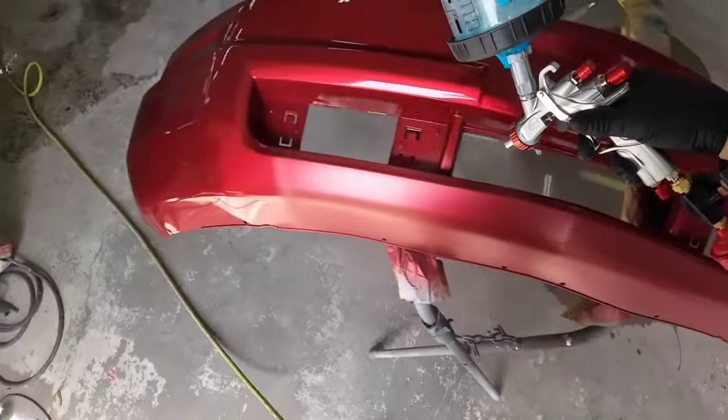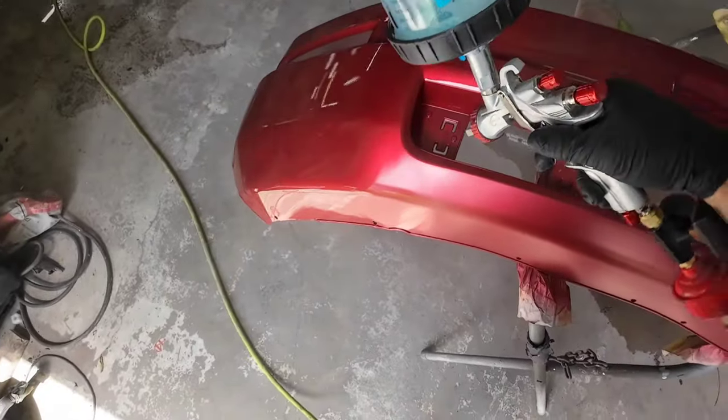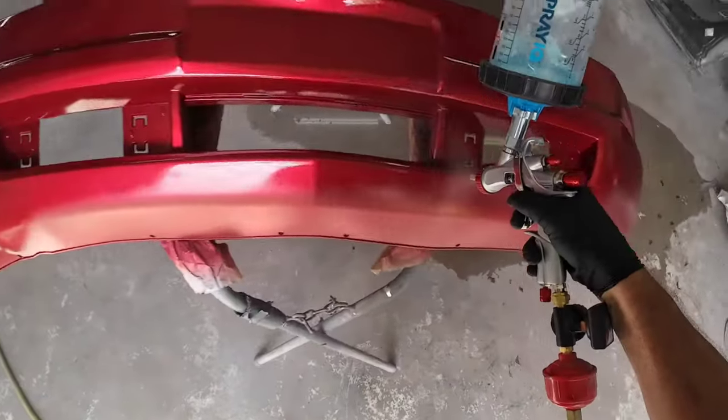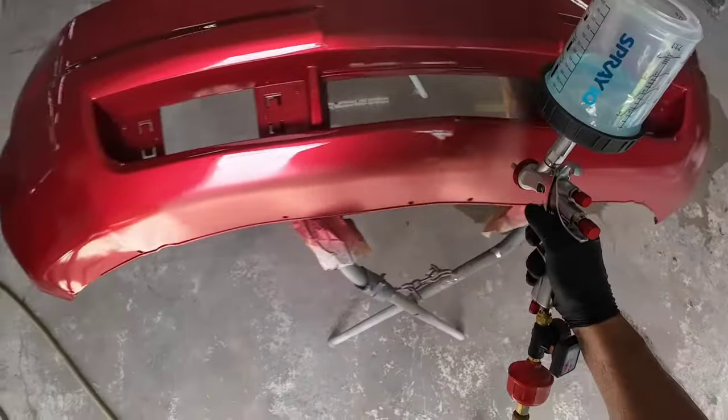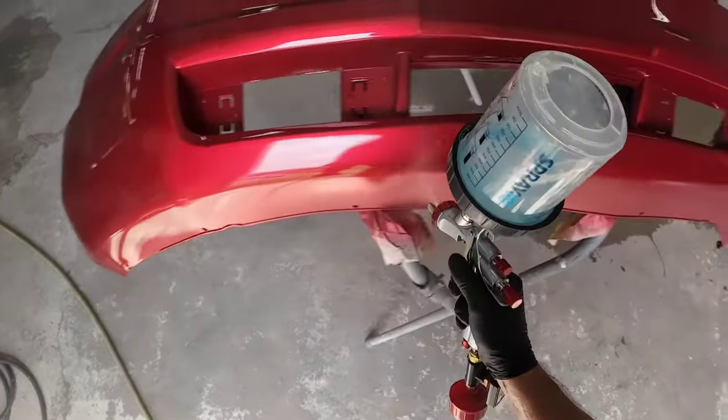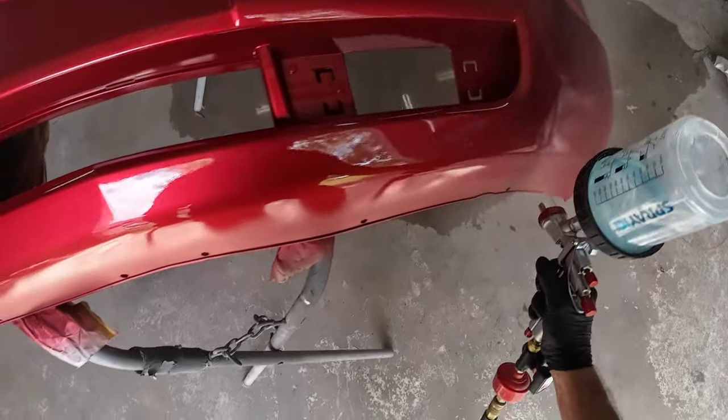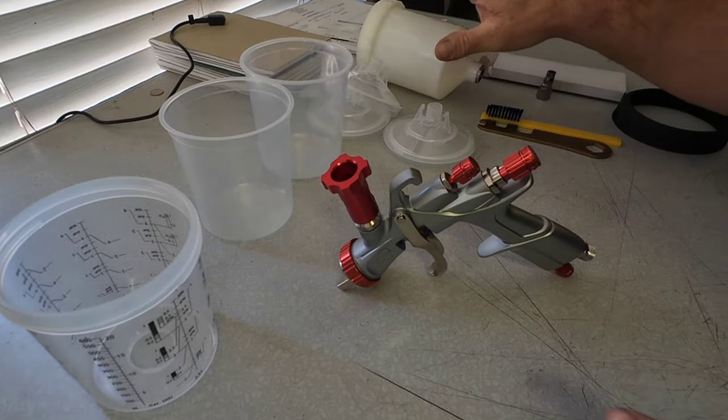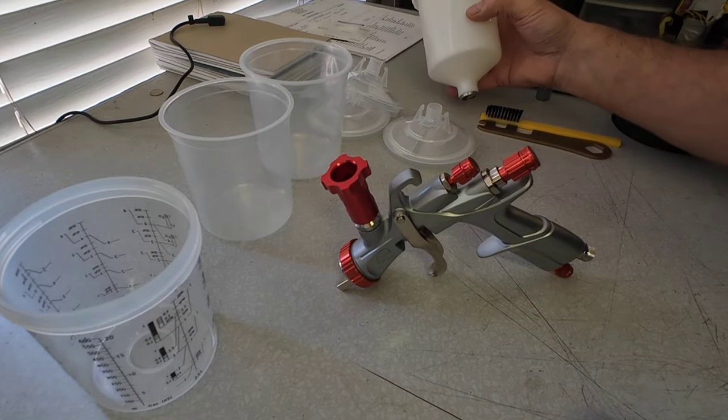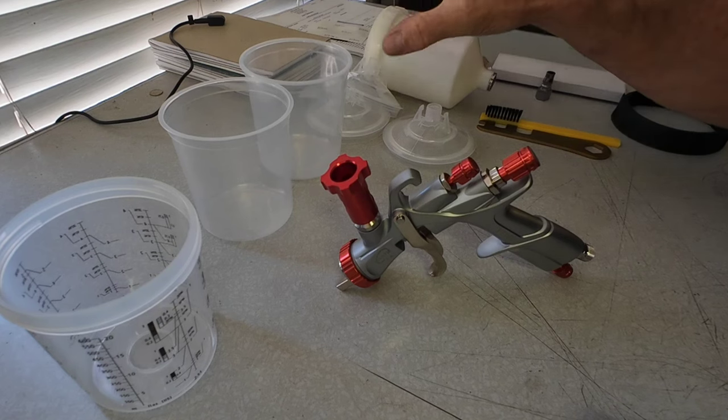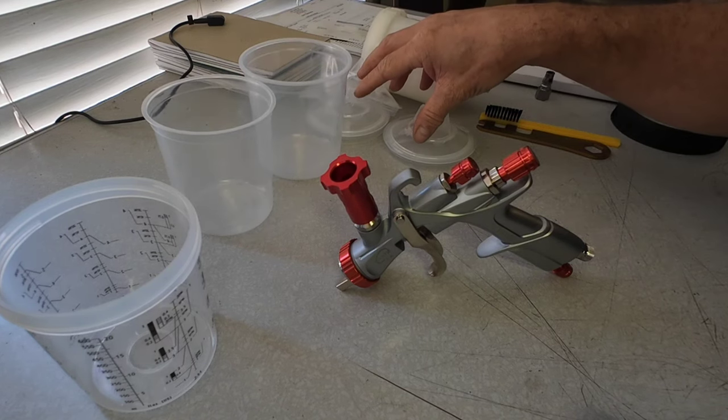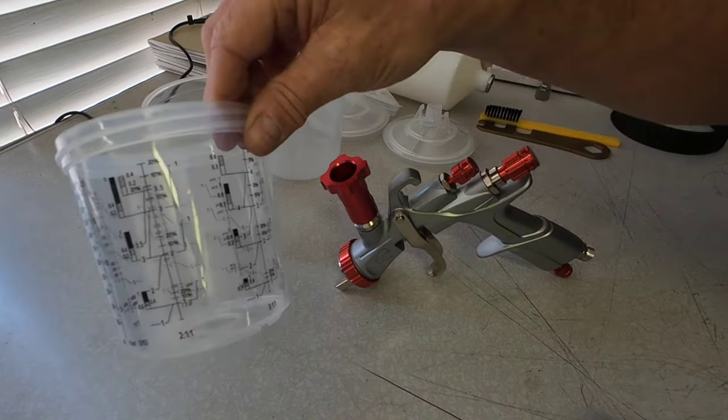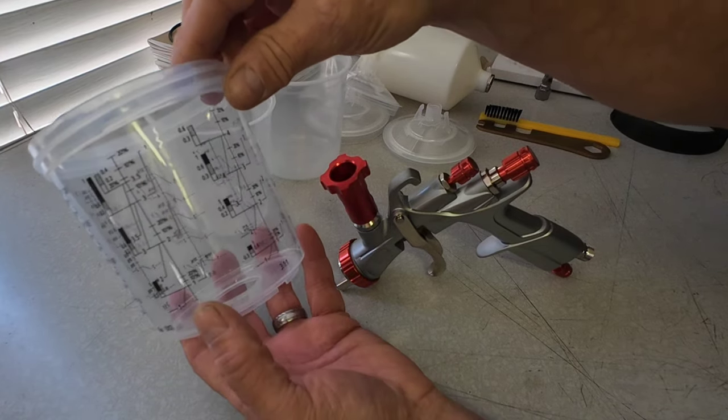The YT-160 comes with the 1.3 cap and needle set, and I find that works really well for sealer base and clear coat. Now there are some larger needle sets available like a 1.5 and a 1.7. So what you get when you purchase this gun is you get the 600 milliliter hard cup right here. You're also going to get three liners, three lids, and then you get this measuring cup. And this allows you to mix up your paint.